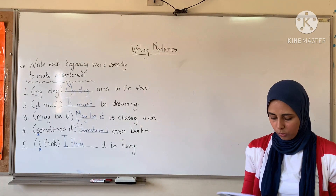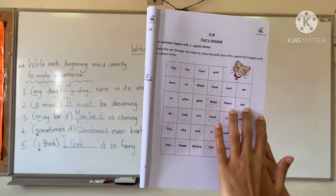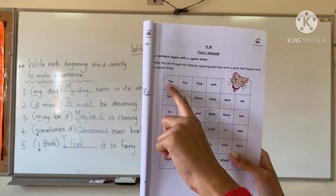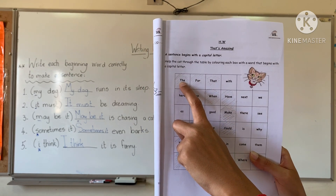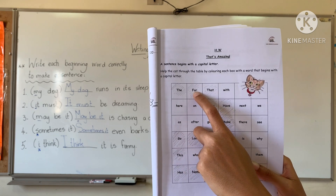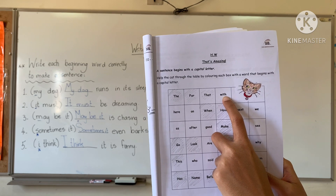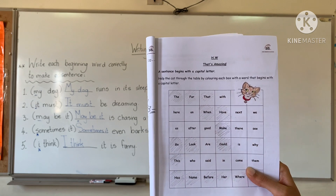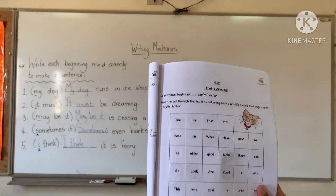It is very easy. Now, your homework is the easiest thing ever. You have some words in a table, and the task wants you to color each box that has a word starting with a capital letter. For example, the word 'The' — does it start with a capital letter? Yes. 'For' — does it start with a capital letter? Yes, capital F. 'That' — yes, it starts with capital T. Color these three boxes. What about this word with small w — does it start with a capital letter? No. So I am not going to color this box. Just color the words that start with capital letters, and that's it. This is your homework. Thank you, Junior One.